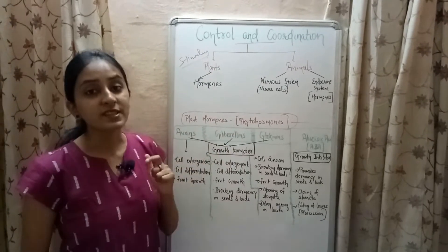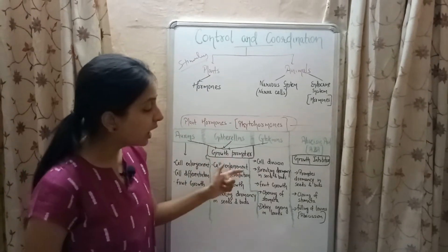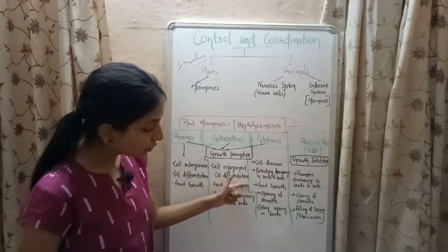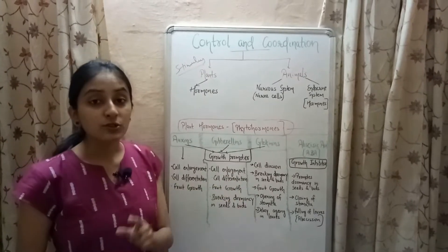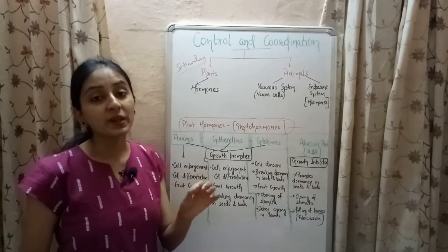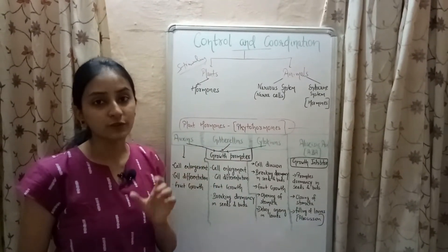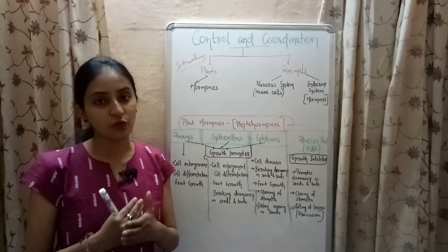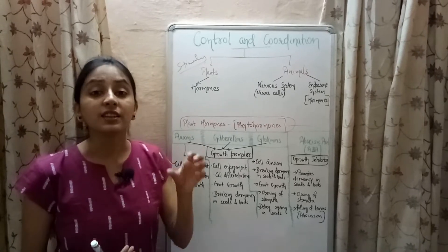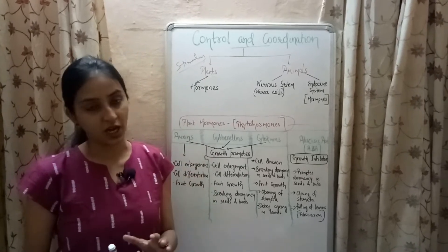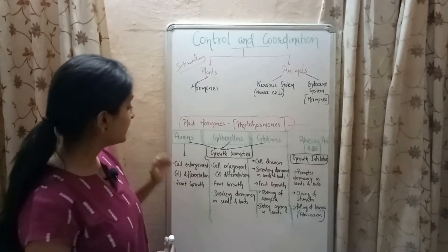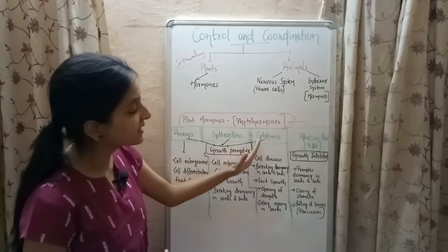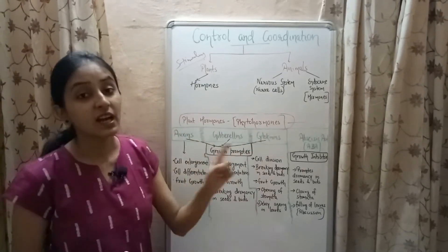Cytokinins promote cell division, breaking of dormancy in seeds and buds, and fruit growth. Cytokinins also help in opening the stomata of plants and delay the process of aging in the leaves. So auxins, gibberellins, and cytokinins are the three growth promoters.